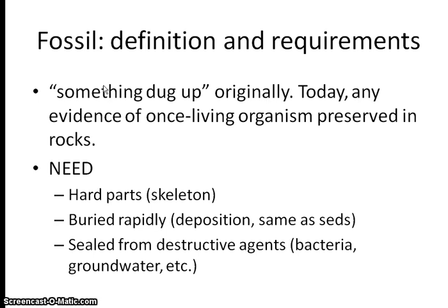We need three conditions to be met in order for a fossil to happen — and this is one of your quiz questions, so you'll want this in your notes. First, we need hard parts. Hard parts don't necessarily mean bone — it could be an exoskeleton, like a trilobite's outer parts, or even soft tissue as long as it gets buried fast enough. Second, it has to be buried rapidly; the sediment needs to be deposited very quickly.